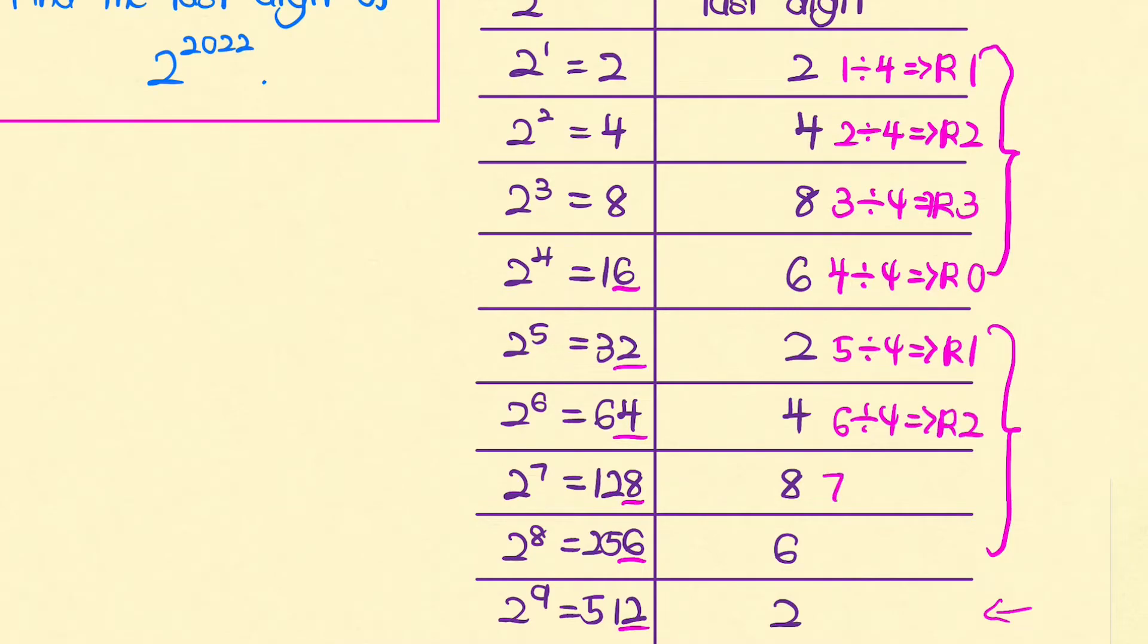And you can do this and so forth to get the fact that if the exponent upon division by 4 has a remainder of 1, then the last digit is 2.